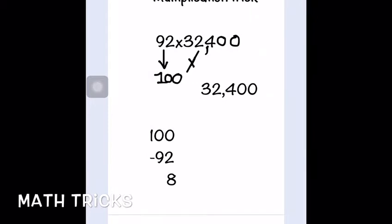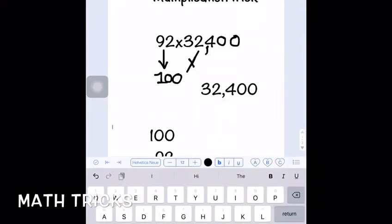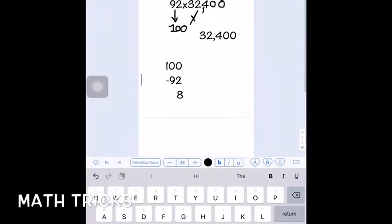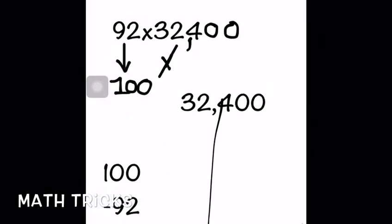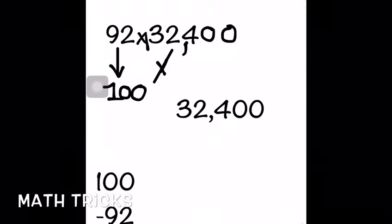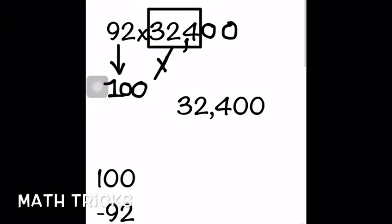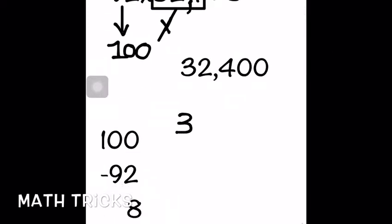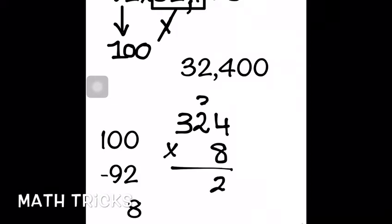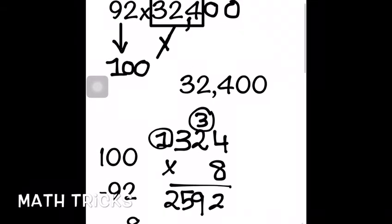Now go back to the original number, which is 324 — the number we are multiplying 92 by. You have to multiply 8 by 324. The answer you get is 2,592.